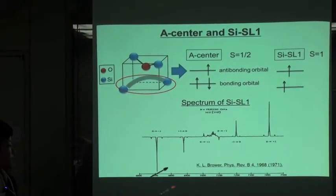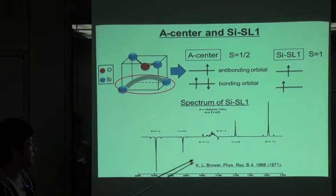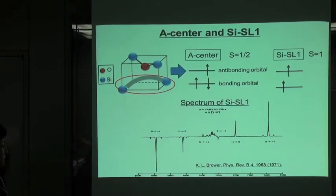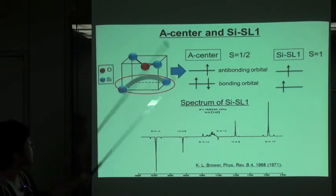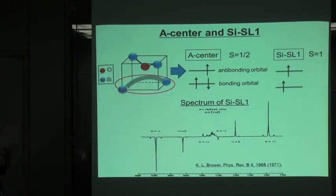The spectra of SI-SL1 was reported in 1971 by Professor Brower's group. And the spectra of SI-KU1 is related to this A center and SI-SL1 spectra.